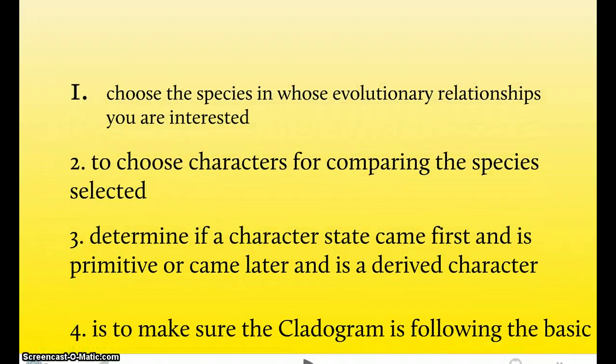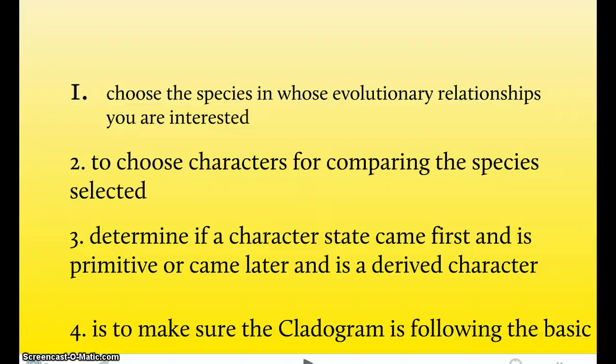Step three, determine if a character state came first and is primitive, or came later and is a derived character. So basically what step three is saying is, once you have your cladogram drawn out, label the characters being derived or primitive.